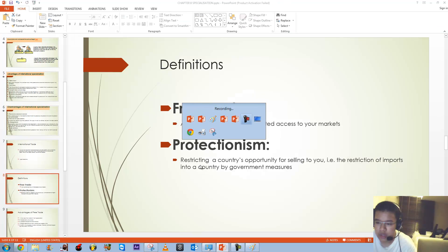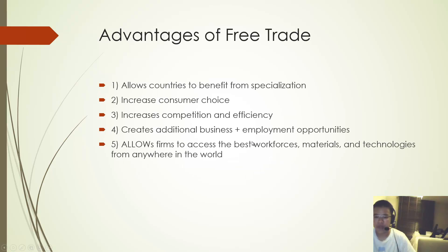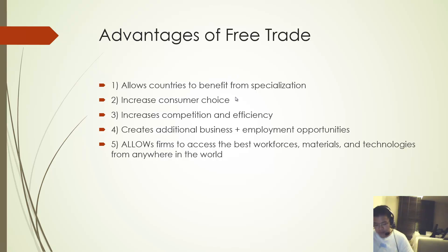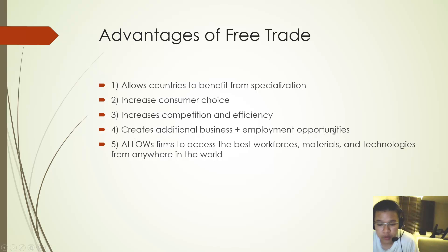We have to describe methods of trade protection. The advantages of free trade: first, it allows countries to benefit from specialization, meaning they can produce what they are best at and trade their surplus. It also increases consumer choice, as consumers can enjoy a greater variety of goods and services from across the world. It increases competition and efficiency, forcing firms to improve costs and product quality to compete with overseas producers. It also creates additional business and employment opportunities as firms expand, and allows firms to access the best workforces, materials and technologies from anywhere in the world.